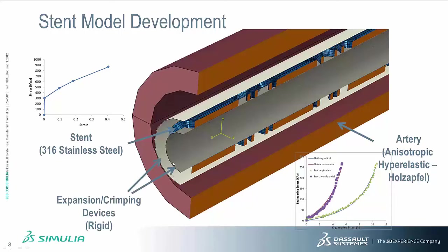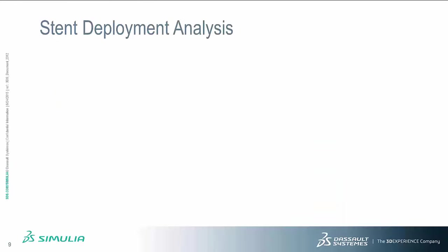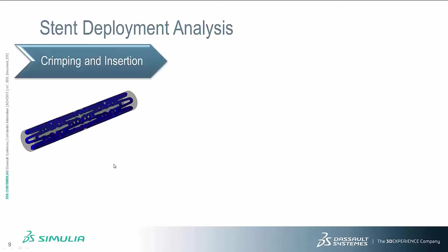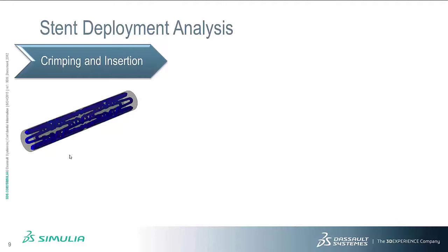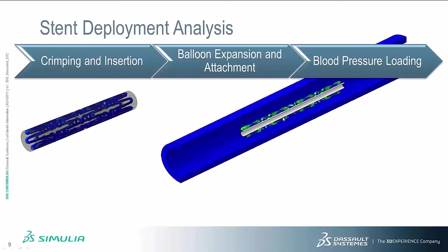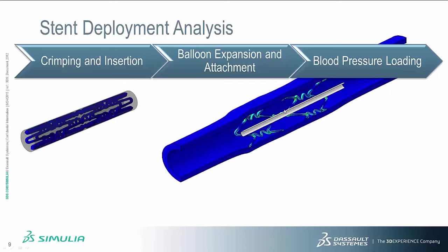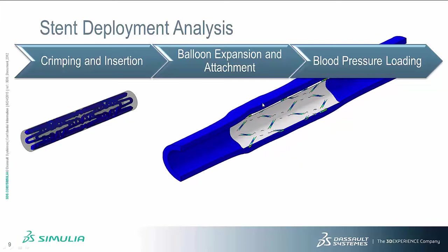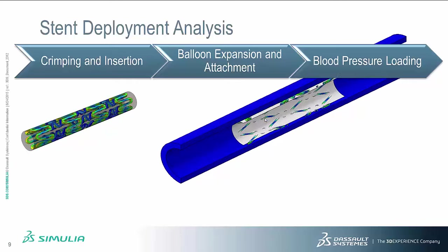There are two more components: expansion and crimping devices, which are solid cylinders modeled as rigid components that expand or contract to implement crimping or expanding of the stent. The stenting deployment analysis includes a first step of crimping — once the stent is manufactured, it is crimped (compressed) so that it can fit inside the catheter inserted into the artery. The next stage is expansion and attachment, where the balloon expands and as it contacts the stent, it expands the stent. Once the stent touches the vessel, it deforms the vessel slightly and attaches to the artery wall.